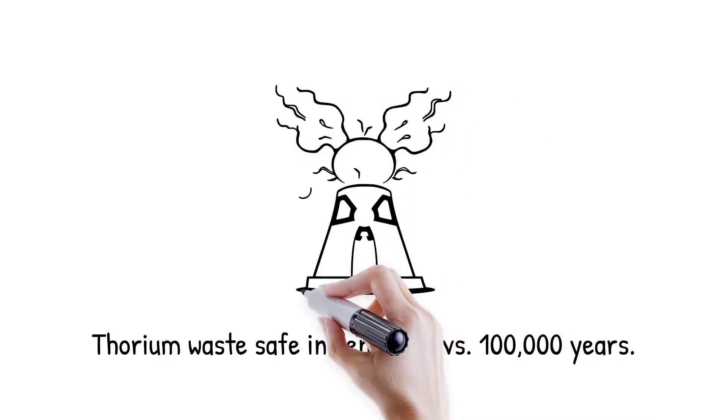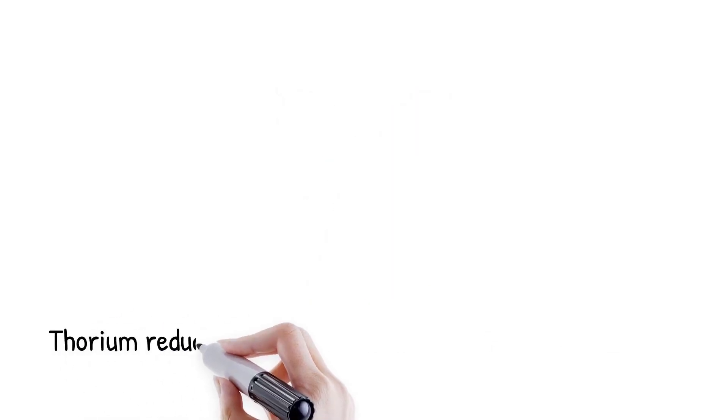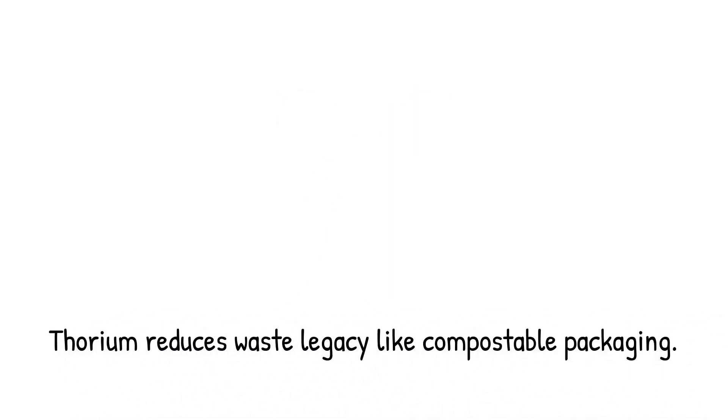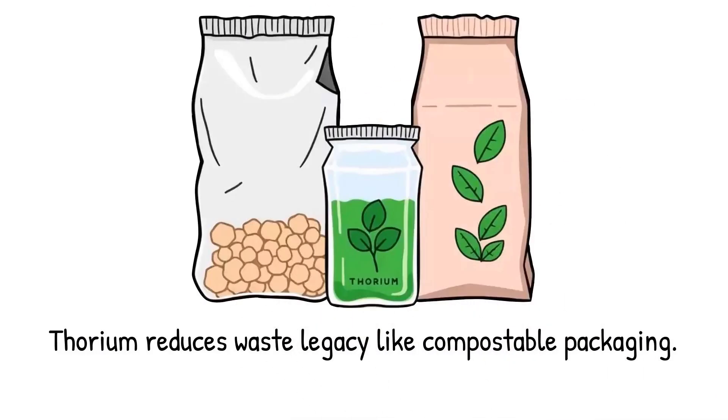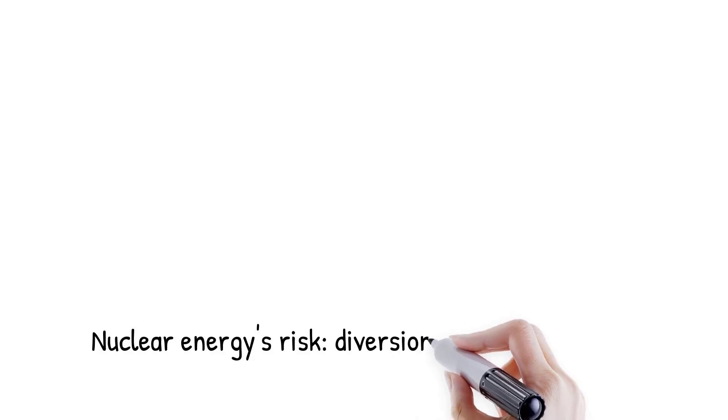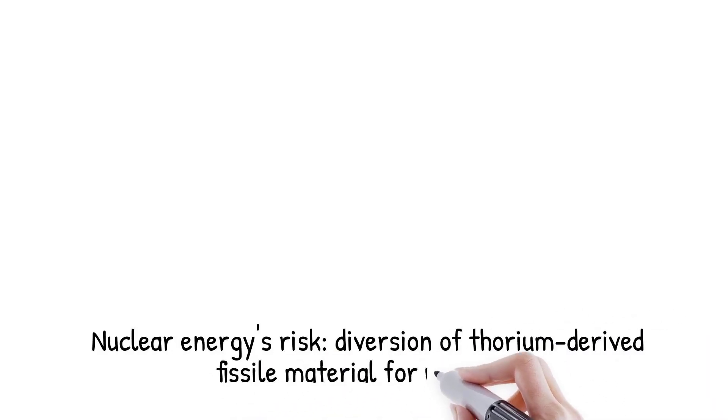For example, a thorium reactor's waste becomes safe to handle within centuries, whereas conventional waste may remain toxic for 100,000 years. Analogy: using thorium is like replacing non-biodegradable plastic with compostable packaging. It leaves far less legacy for future generations.